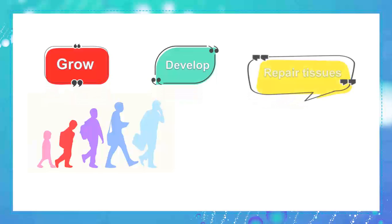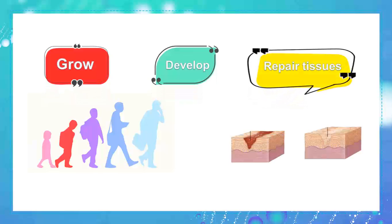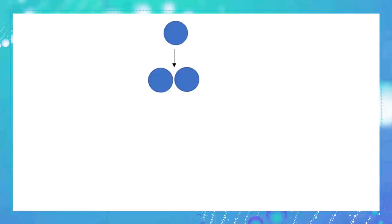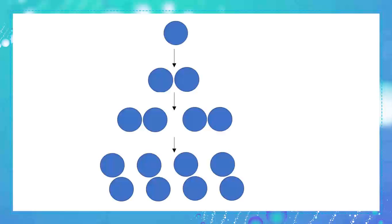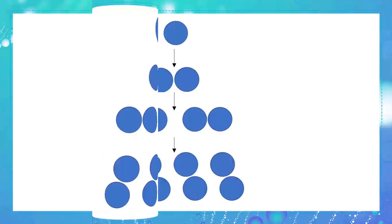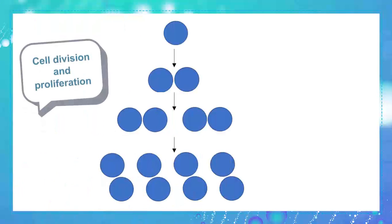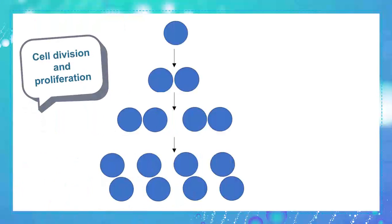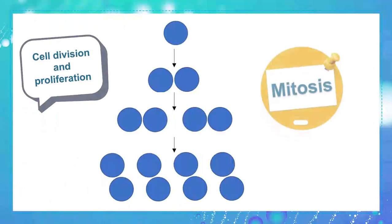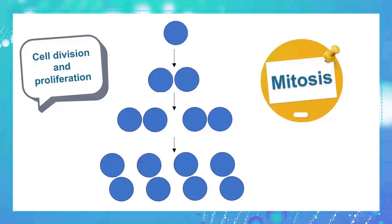In order to grow, develop, and to repair damaged tissue, there is a process where one cell becomes two cells, four cells, and thousands of other cells. This type of cell division and proliferation is known as mitosis. So can you remember the phases of mitosis? Let's see throughout this video.